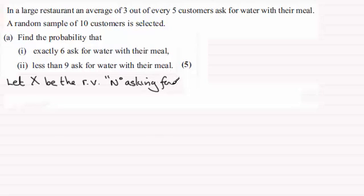Okay, and we've got to decide what kind of distribution this random variable X follows. Well, we've got a finite number of trials, 10, and a customer will either ask for water or not ask for water. And the probability of asking for water remains constant at 3 fifths. So assuming that events occur at random and are independent to one another, we've got that this random variable X follows a binomial distribution.